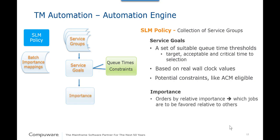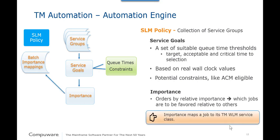Importance, also known as relative importance, indicates to SLM which jobs are to be favored relative to others. During times when things are not doing as well, you want to make sure your most important work gets the most attention. Batch importance maps to a specific Throughput Manager WLM service class, and SLM requests that service class from WLM.